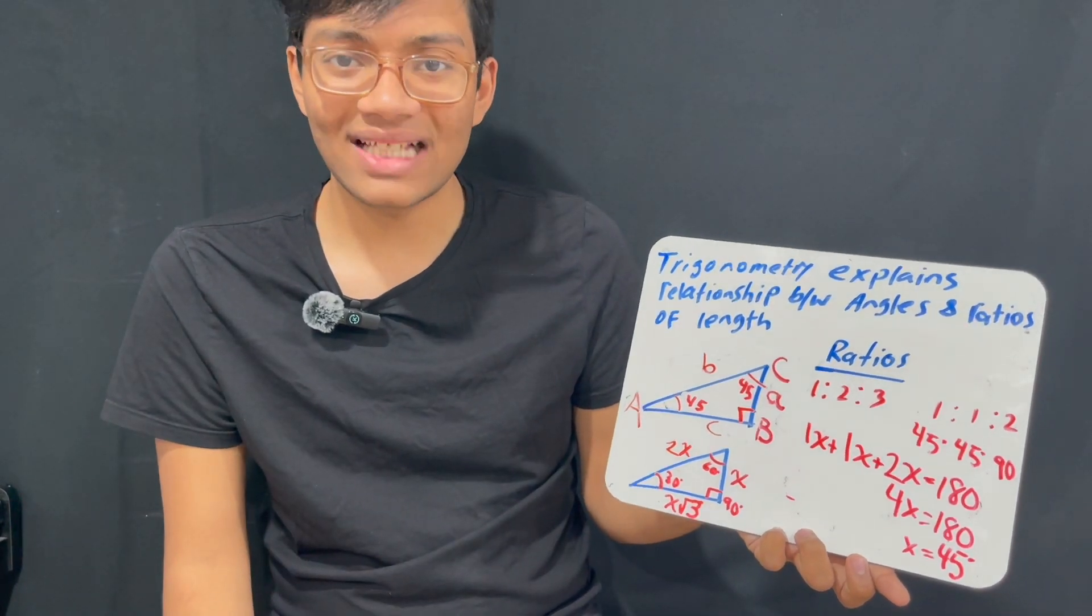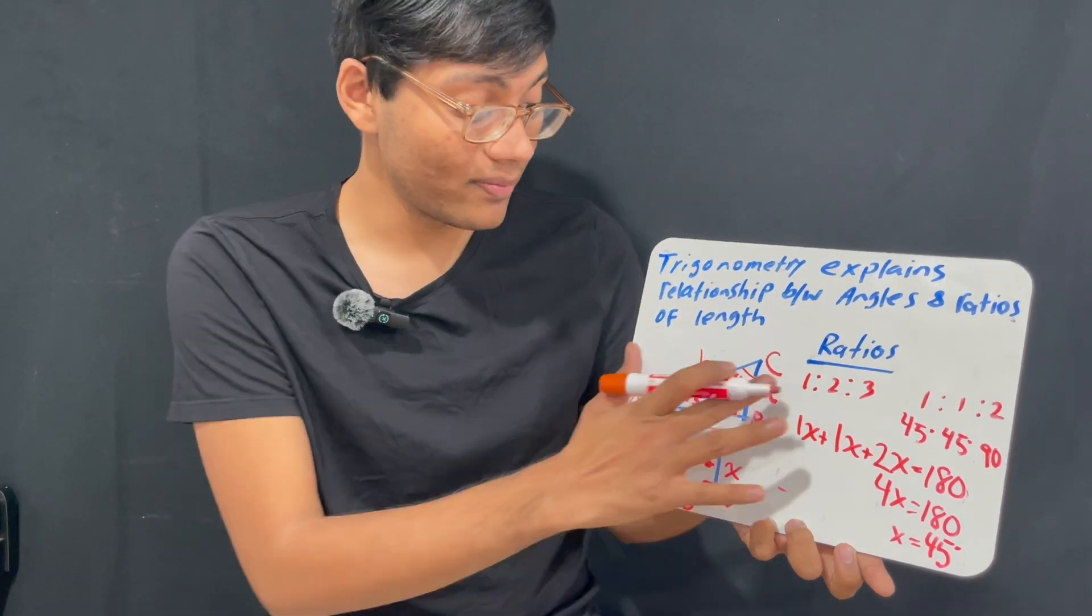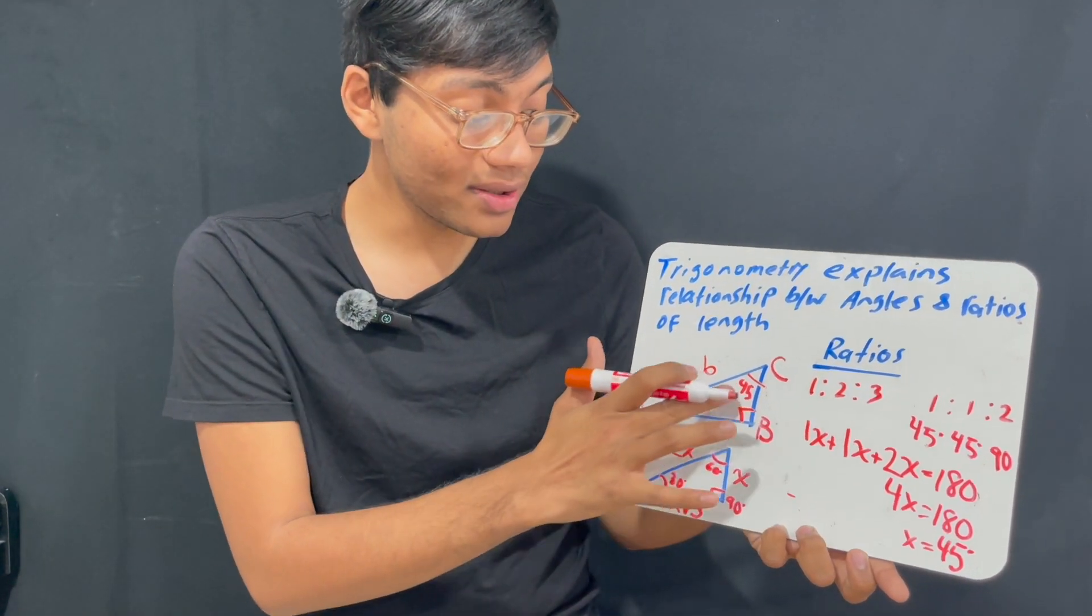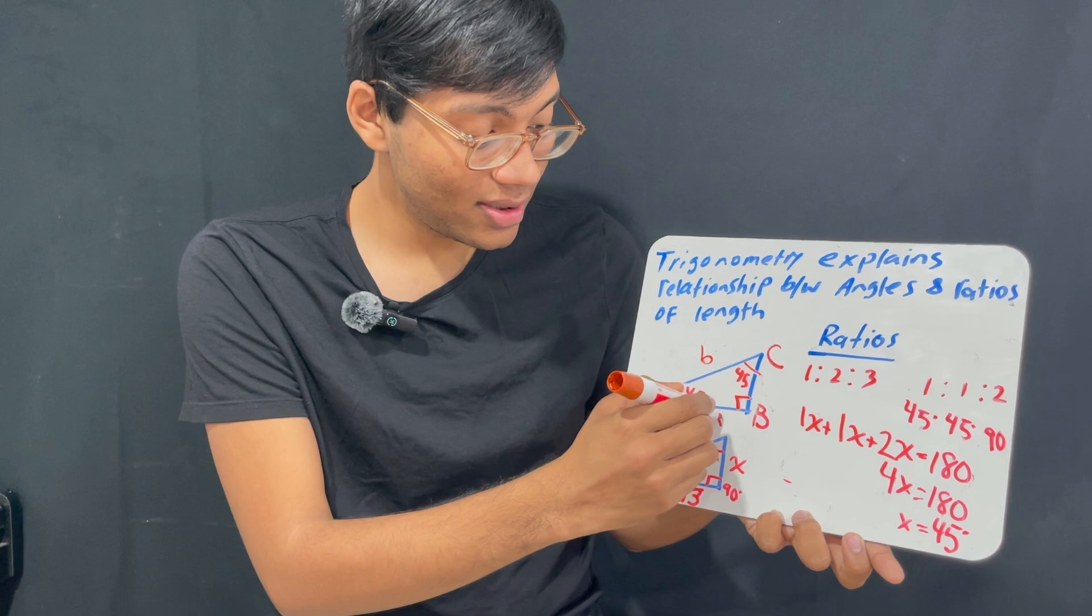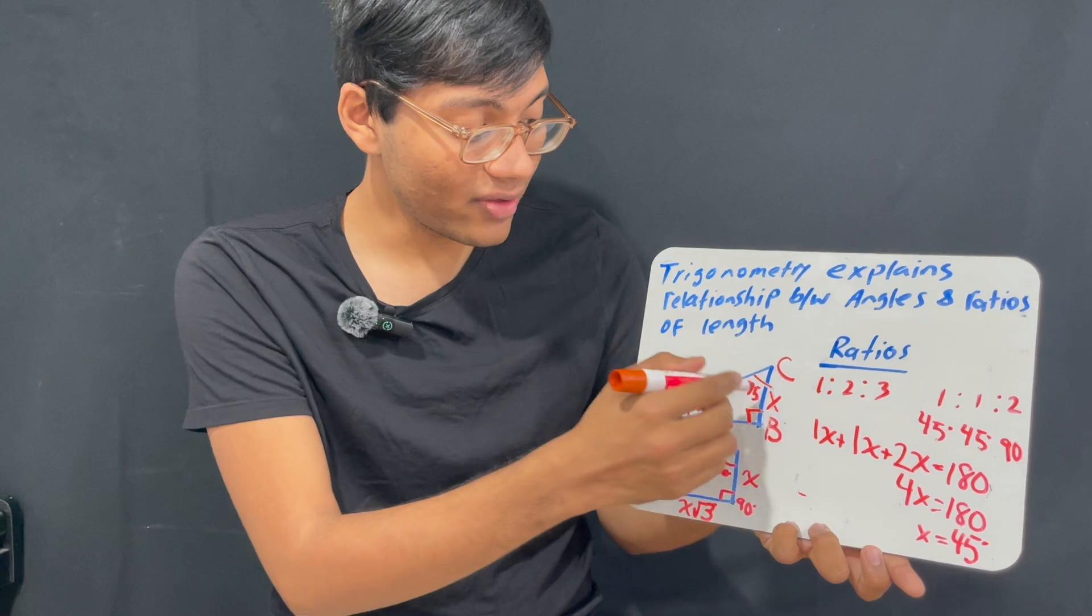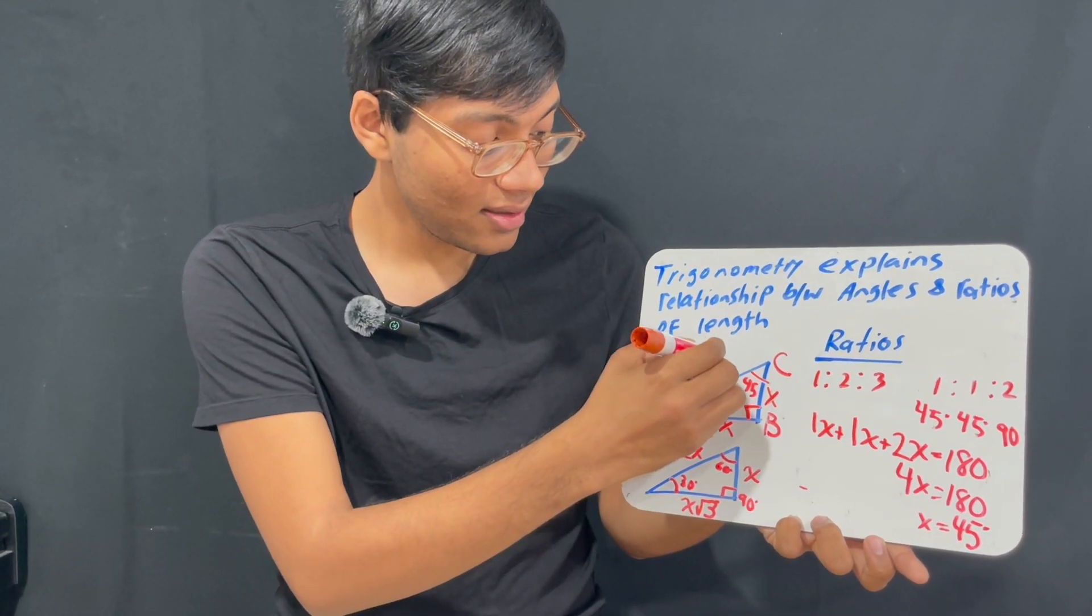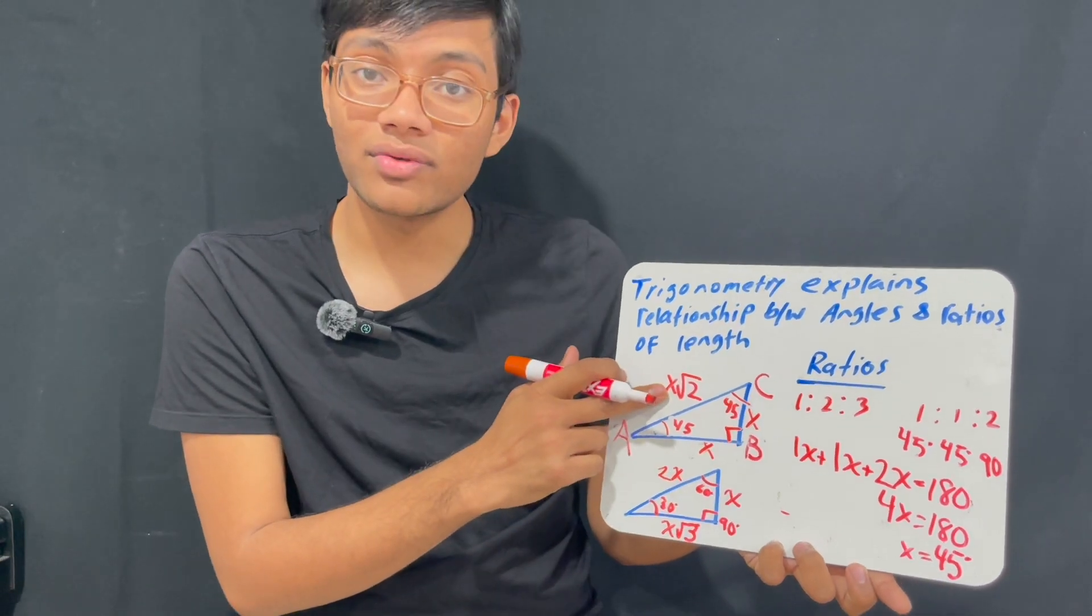What are the ratios between the sides? Well, for a 45-45 degree right triangle, it's very simple. Since you have two angles that are the same, the two sides are also going to be the same. And then, you just use Pythagorean theorem to find out that if this is x and this is x, then the hypotenuse is just x root 2.